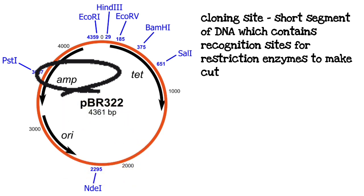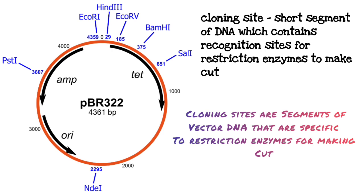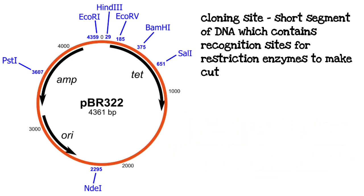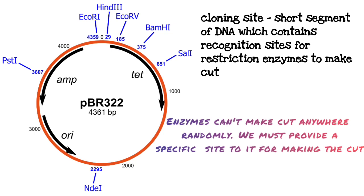Like antibiotic resistance gene, ampicillin, tetracycline. The cloning sites are nothing but the DNA segments of the plasmid that is specific to the restriction enzymes. Like if we want any restriction enzyme to make a cut on the plasmid, then it cannot cut just anywhere randomly, right?